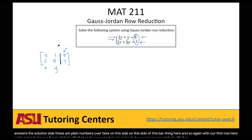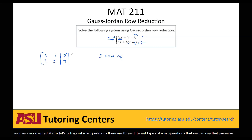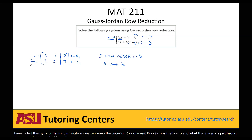Now that we have this written as an augmented matrix, let's talk about row operations. There are three different types that preserve the linear relationship between the equations. The first is that we can swap rows — so if we have row one and row two, we can swap their order, taking this row and writing it in that position, and similarly taking the top row and writing it in the other position.